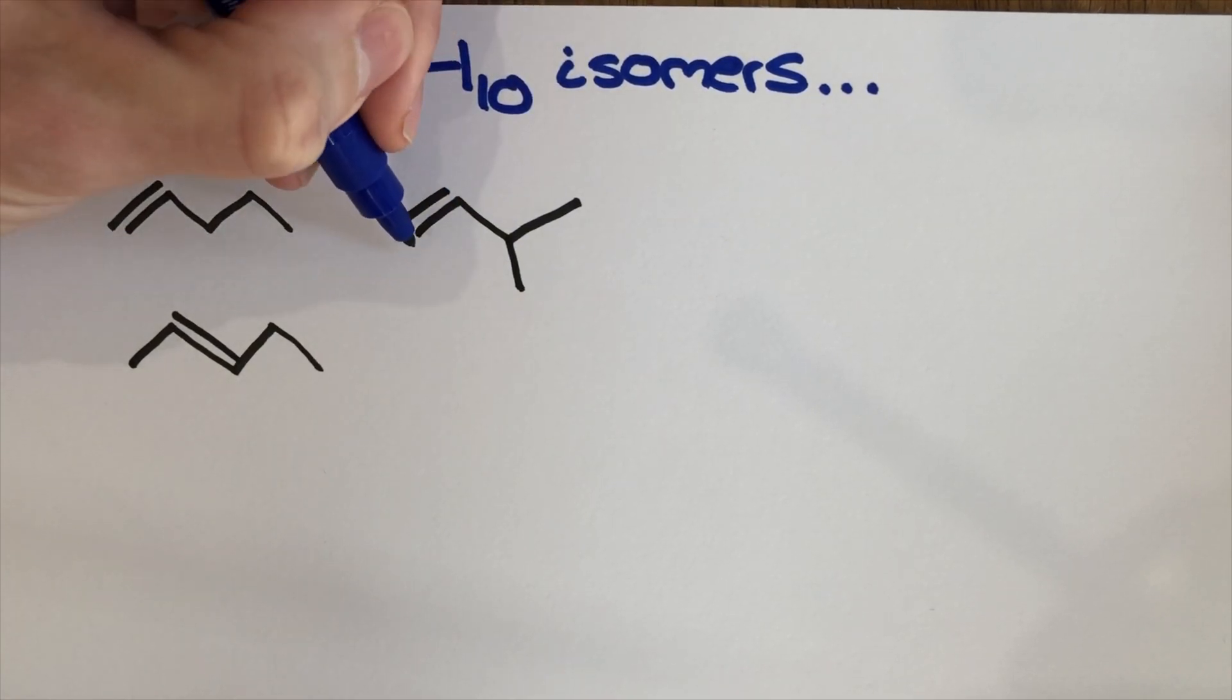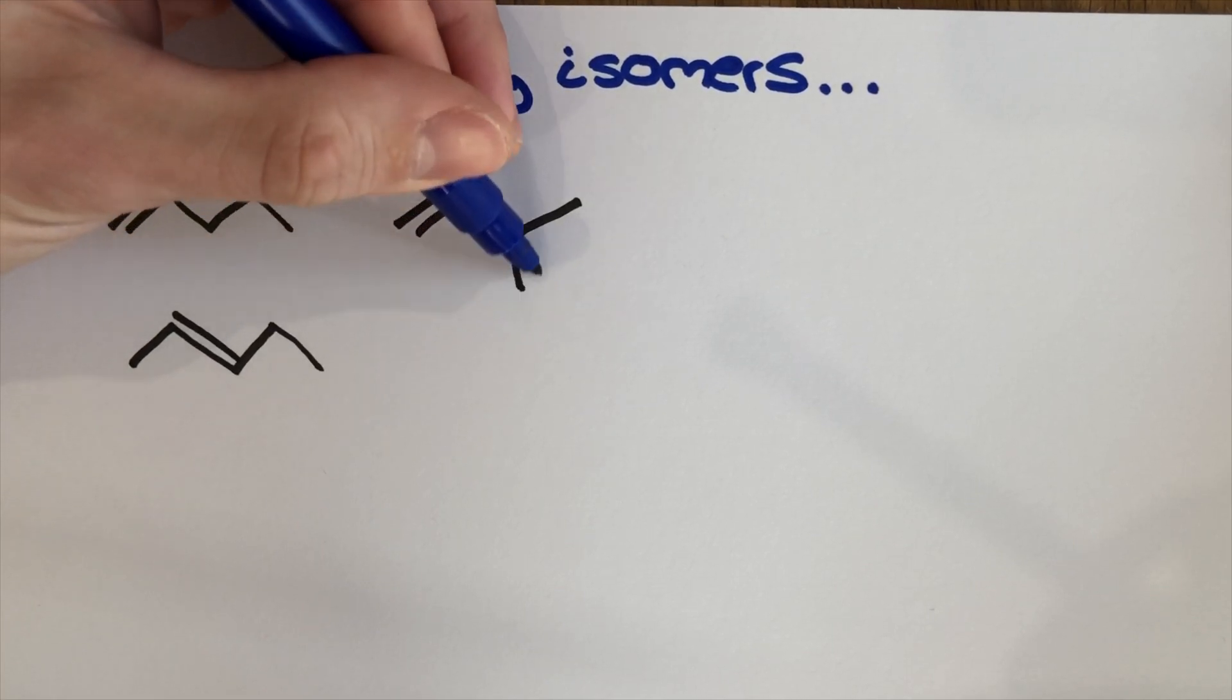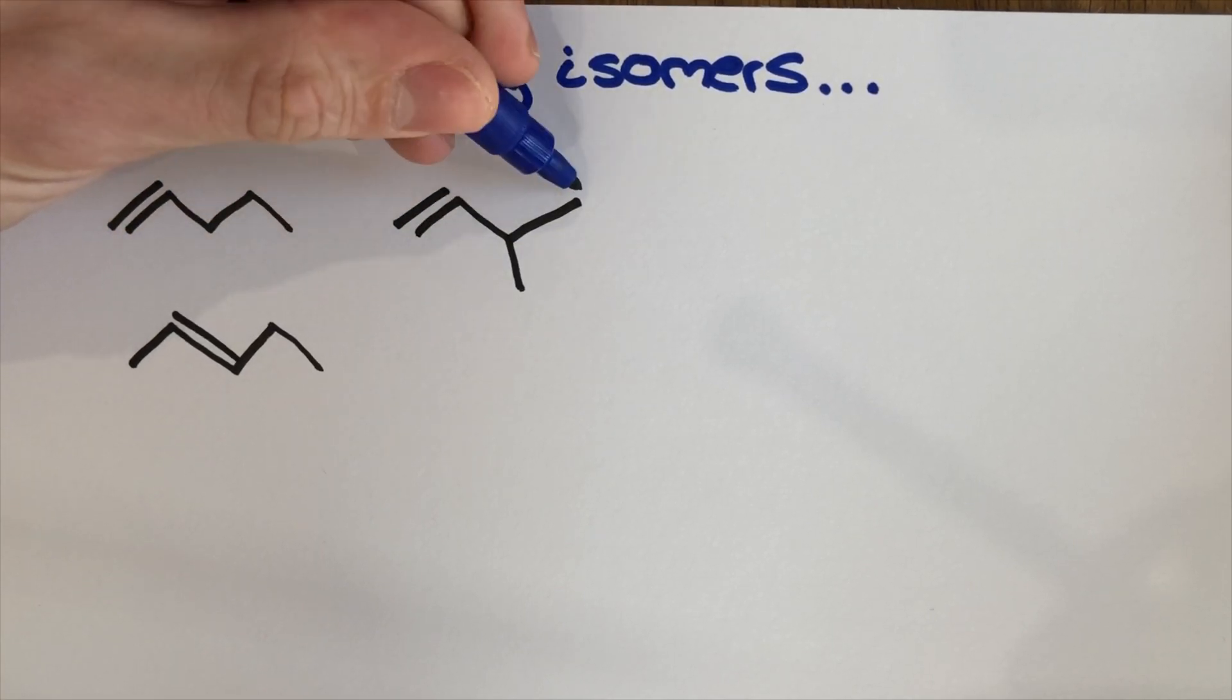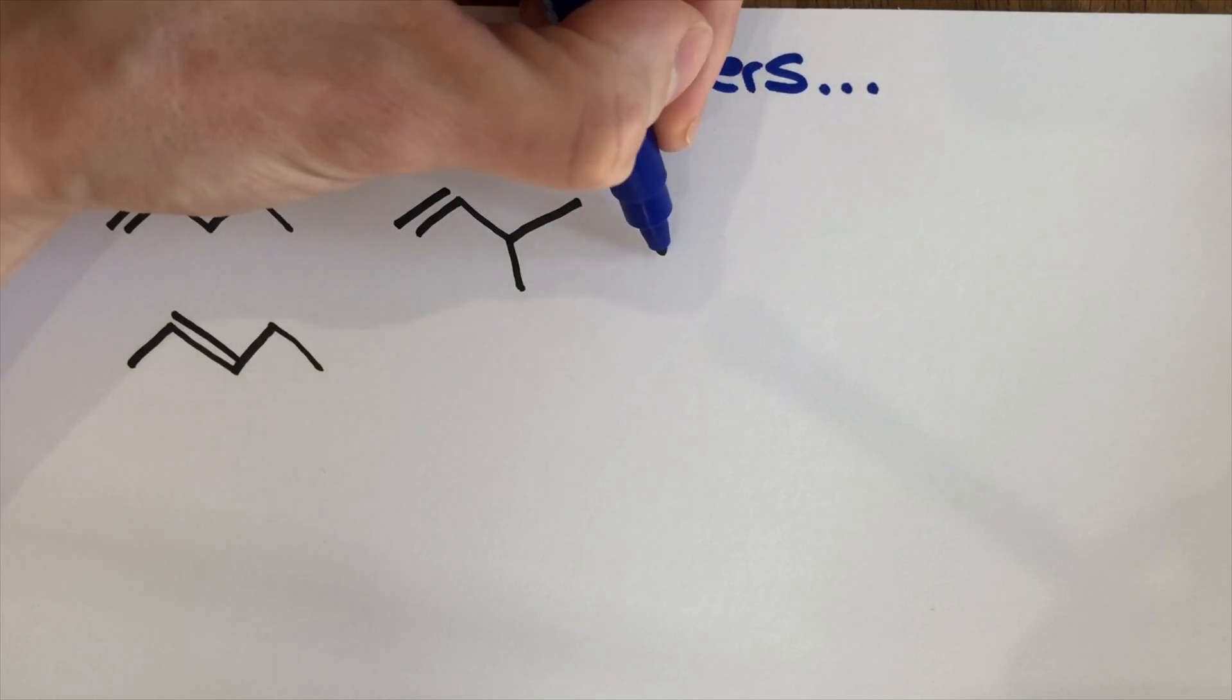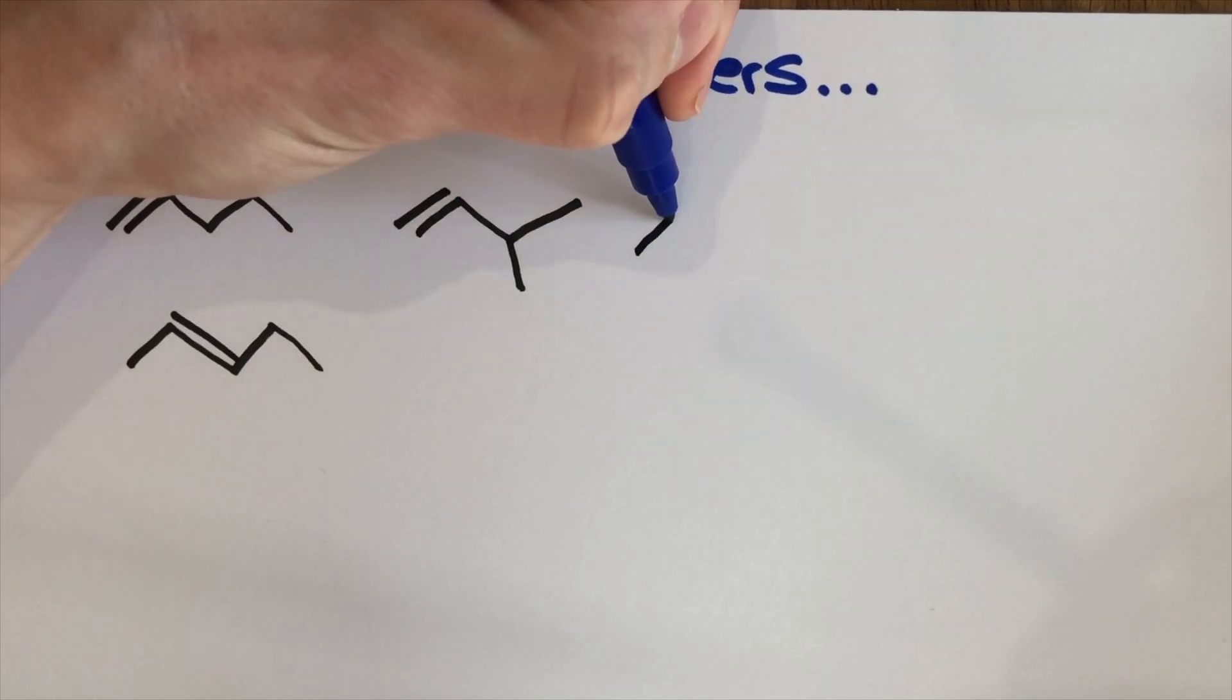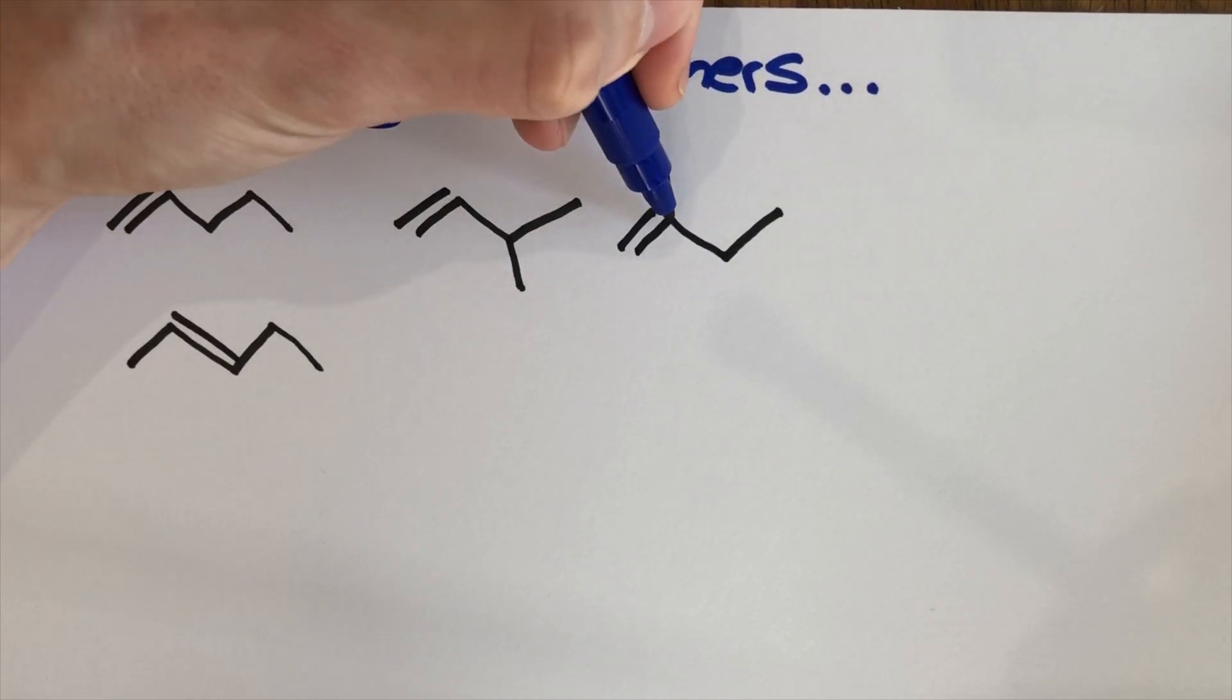So this time I've got one, two, three, four, I've got a four carbon chain so I've got 3-methylbut-1-ene. I could also move that branch over just a little bit more and it gives me another option here which is 2-methylbut-1-ene.